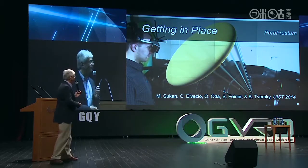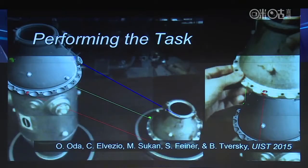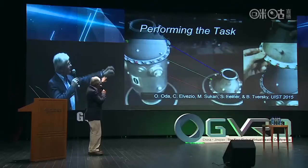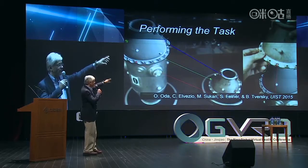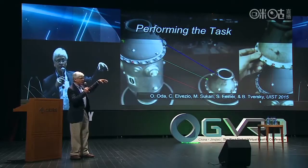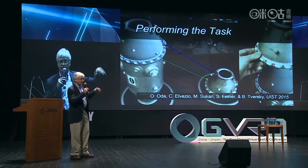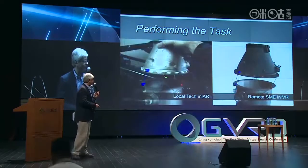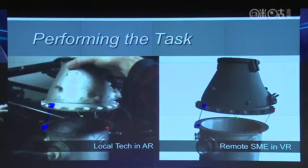Once we get the person in the right place, we need to get them to perform the task correctly. These stills are set up by our remote expert to demonstrate the task. You see the bottom part of the combustion chamber, a virtual representation of where the top part needs to go, and the physical top part at the lower right. There are also colored rubber band lines connecting corresponding points on the top and bottom to make it easy for the local technician to get things in the right orientation and position. Our local technician works in AR, and our remote expert works in VR.